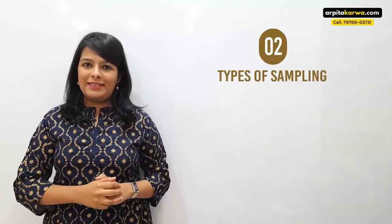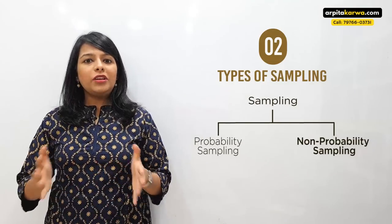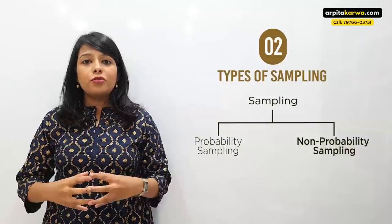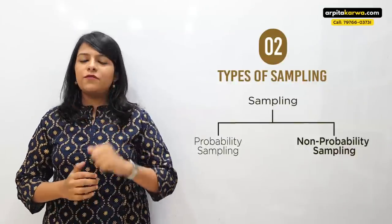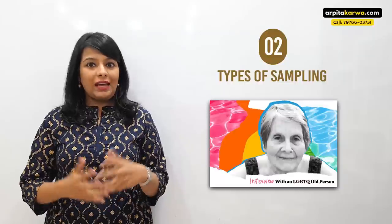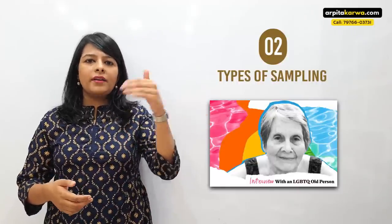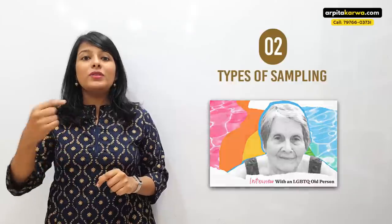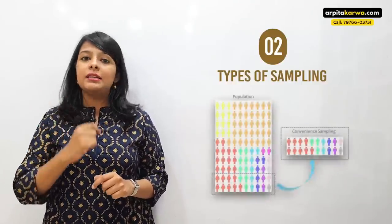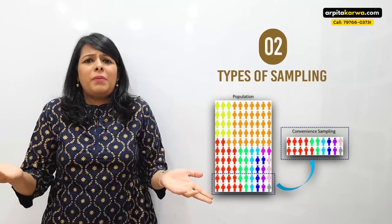Let us now look at non-probability sampling. In non-probability sampling, as the name suggests, participants are chosen in non-random ways, so every participant will not have an equal chance to get selected. For example, there's a research scholar named Chiara who wants to know people's opinions about LGBTQ. She goes to a mall near her house and asks people there about their views. This method of choosing a sample is known as convenient sampling, which is a part of non-probability sampling, because Chiara is choosing research participants based on her own convenience.